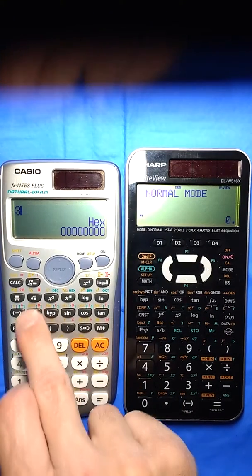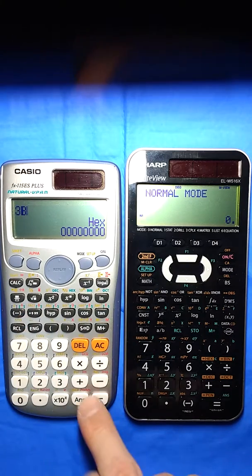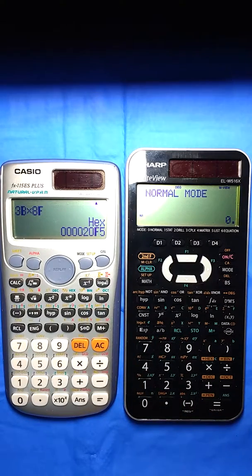And then I could say 3. I don't have to do shift because it knows I'm talking hex here. 3b times 8f equals 20f5. That's nice.